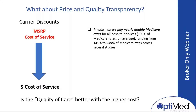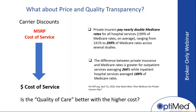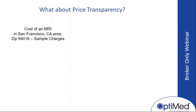Private insurers pay nearly double Medicare rates for hospital services, ranging from 141% up to 259% across a number of studies. According to the Kaiser Family Foundation in April 2020, the difference between private insurance and Medicare rates is even greater for outpatient services at a hospital: 264% versus 189% of Medicare rates. Since a majority of our services are on an outpatient basis, we're averaging 264%. Are you getting a better quality of care by paying those extra prices?